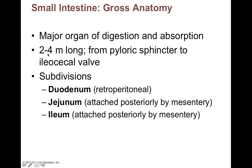The small intestine is two to four meters long — about eight to twelve feet — running from the pyloric sphincter to the ileocecal valve. In a living body it's in a contracted state, but in an unembalmed cadaver the muscle relaxes, doubling its length to up to twenty feet. In a living person it stays around eight to twelve feet.